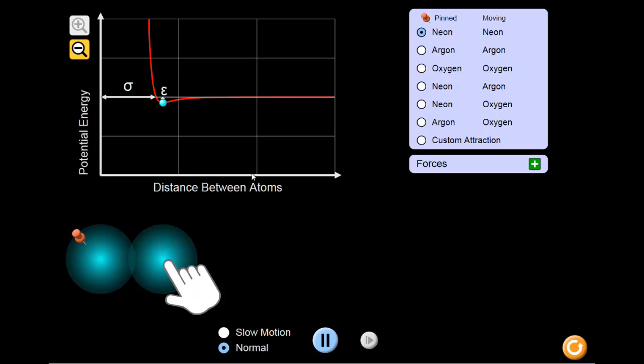The x-axis shows the distance between the two atomic nuclei, and the y-axis shows the chemical potential energy of the system.